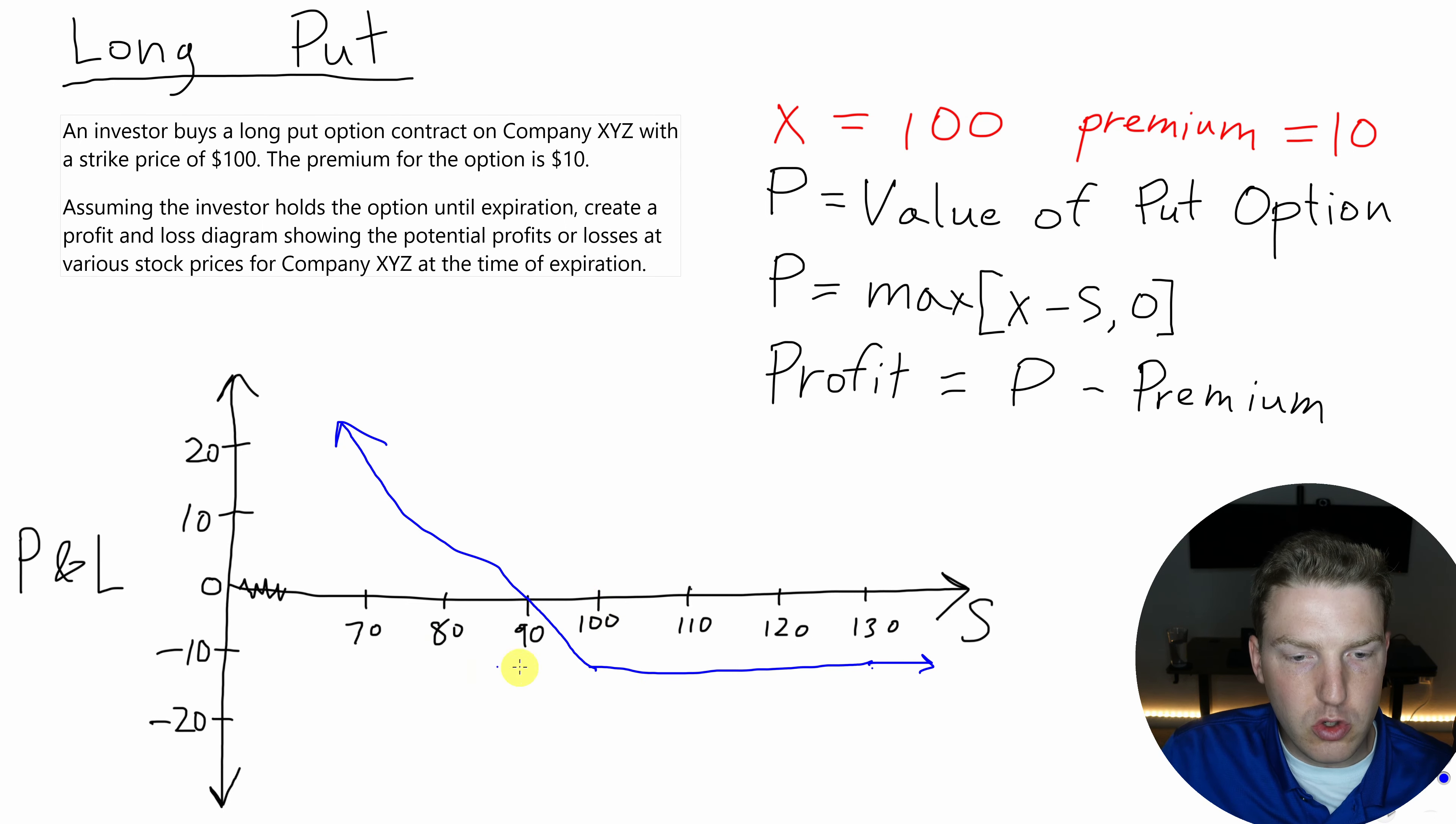So if we get to $100, then the value of this put option is equal to $100 minus $100. And then the profit is just going to be equal to $0 because that $100 minus $100 is $0 minus the $10 we paid.